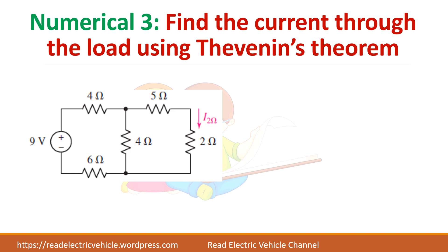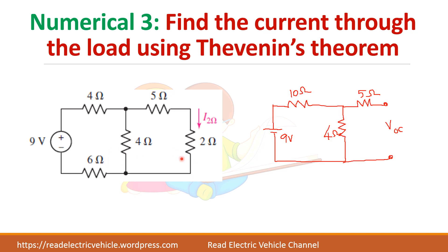The third problem is finding the current through the load using Thevenin's theorem. The problem is here, and you have to find the current through the 2 ohm resistor. So let us find the open circuit voltage first.